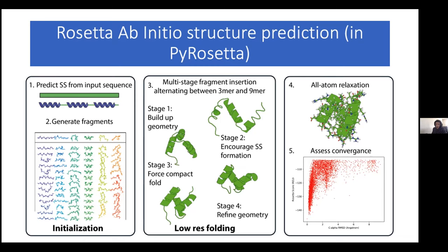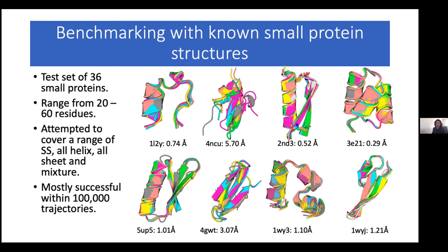The first thing I did was cross-validate this. I pulled out a test set of about 36 proteins from the PDB, covering a range of different secondary structures and sizes between about 20 to 60 residues, and checked whether I could fold these successfully using the algorithms I'd set out to use. For the most part, it worked. There were some cases where it seemed to have trouble — these were structures typically derived by NMR where you had some flexibility towards the termini of the protein — but the main core of the proteins always seemed to be fairly well predicted.